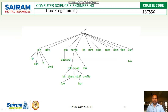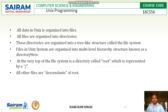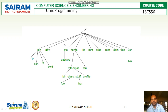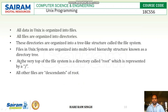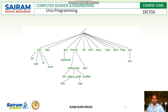Files in a Unix system are organized into a multi-level hierarchy structure known as the directory tree. At different levels they are organized hierarchically — first level, second level, third level, fourth level. At the very top of the file system is a directory called root, which is represented by a forward slash.